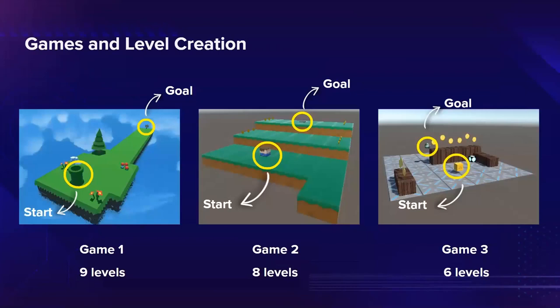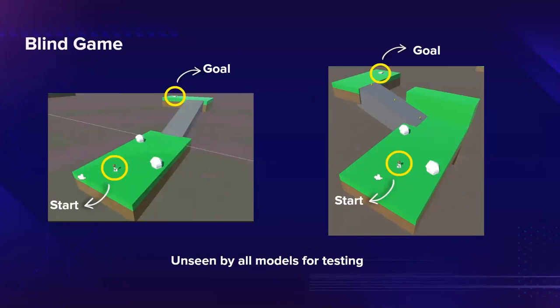Our approach was to find open source games and develop levels for them, then train our models on them. We found three open source games and developed levels for each: nine levels for the first, eight for the second, and six for the third. These games share similarities — they all have a starting point, a goal, and sometimes secondary objectives like collecting coins or avoiding enemies. These similarities are the main characteristics of our general focus, the 3D platformer genre. We also found another open source game which serves as a blind game for testing — we would train the model on the other games, then integrate it into this game and observe how it behaves, developing metrics to compare agent performance.